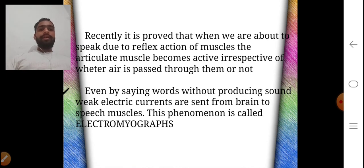Recently, it is proven that when we are about to speak due to reflex action of muscles, the articulate muscles become active irrespective of whether air is passed through them or not. Even while saying words without producing sound, weak electric currents are sent from our brain to speech muscles. This phenomenon is known as Electromyography.